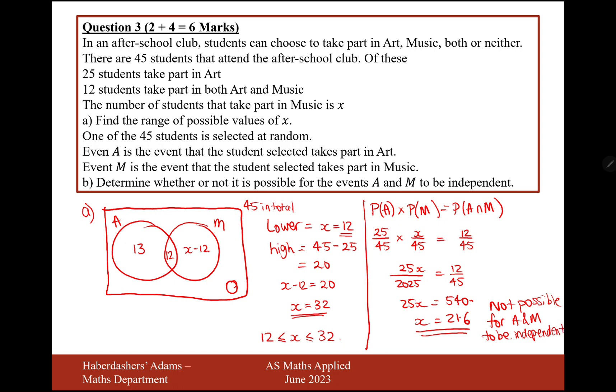The only way it could have been independent was if x was equal to 21.6, which can't happen. You can't have a decimal number of students. So there we are. That's the answer for question three, worth a total of six marks. Let's now move on to question four.